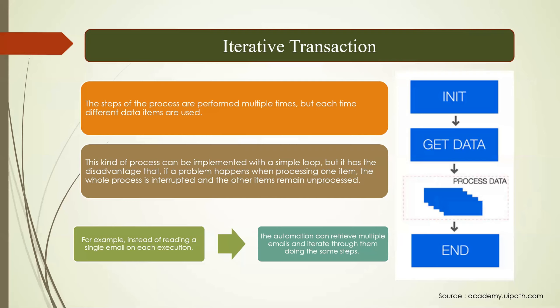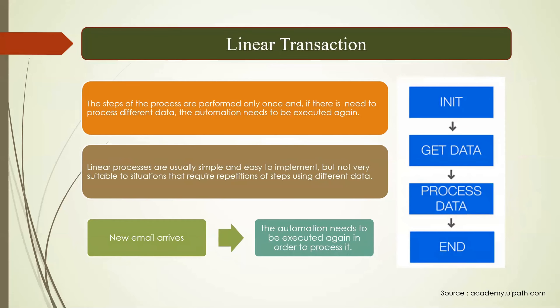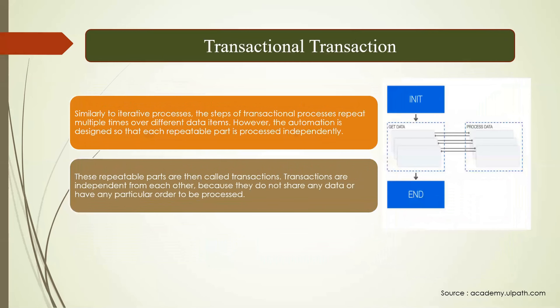To recap: in linear you execute the process only once — initialize, get data, process, end. In iterative, processing is reoccurring but you get all the data at once. For example, if you have an Excel with 100 rows, you read all 100 rows at once and process them one by one. The drawback is: if any transaction fails, it impacts the entire automation. The third type is transactional — and that is where RE Framework comes in.